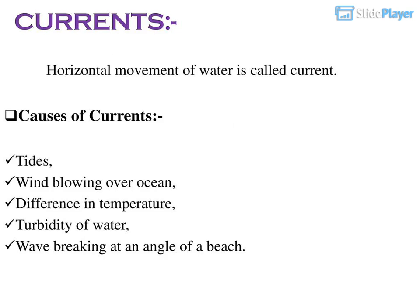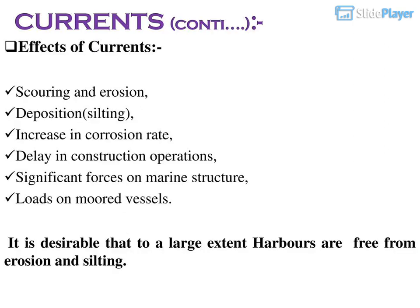Currents: Horizontal movement of water is called a current. Causes of currents include: tides, wind blowing over the ocean, difference in temperature, turbidity of water, and wave breaking at an angle of a beach. Effects of currents include scouring and erosion, deposition/silting, increase in corrosion rate, delay in construction operations, significant forces on marine structures, and loads on moored vessels. It is desirable that harbours are largely free from erosion and silting.